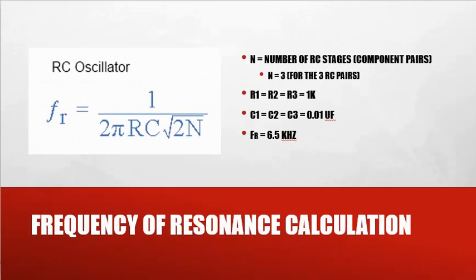Frequency of resonance calculation, we call it FR. Sometimes you'll see it as FO, as frequency of oscillation. For an RC oscillator, FR is equal to 1 over 2 pi RC square root of 2 times N. N is the number of RC stages, the component pairs. We had three RC pairs in the previous, or three RC stages, so N is equal to 3.